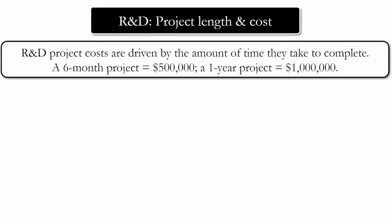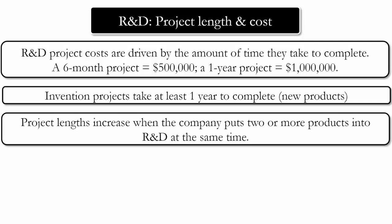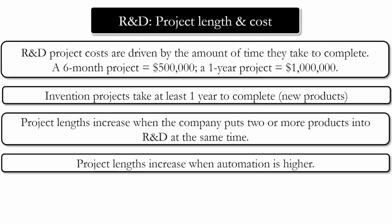R&D project costs are driven by the amount of time they take to complete. A six-month project costs you half a million dollars, and a one-year project costs you one million dollars. When your company puts two or more products into R&D at the same time, or when automation is high, project lengths will increase.